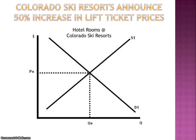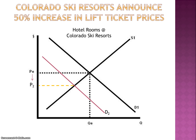Last example: a Colorado ski resort announces a 50% increase in lift ticket prices. In the market for hotel rooms at Colorado ski resorts, the demand is going to decrease because fewer people are going to be traveling to Colorado to go skiing if it's more expensive. So fewer people are going to need a hotel room — these are complementary goods. Demand for hotel rooms will decrease, causing the price of hotel rooms to drop and the equilibrium quantity to decrease since fewer people are traveling there.